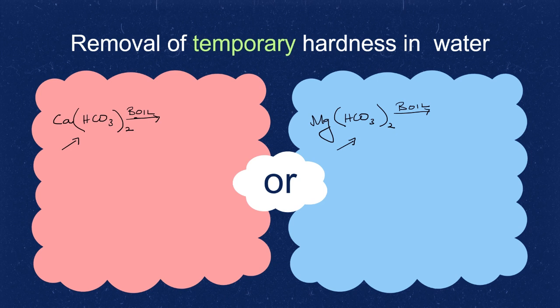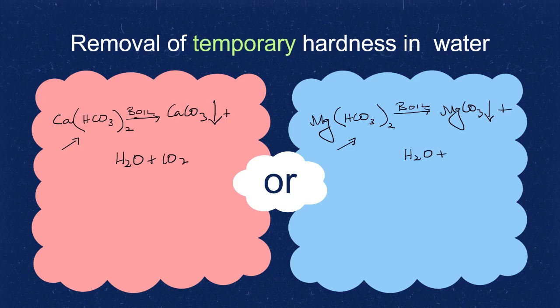So if we boil them, what happens is their carbonate comes and these carbonates are precipitates that means they get into the solid and this can be filtered out, they are insoluble. And you have water and carbon dioxide, and they escape as a gas, and the residual water is soft.